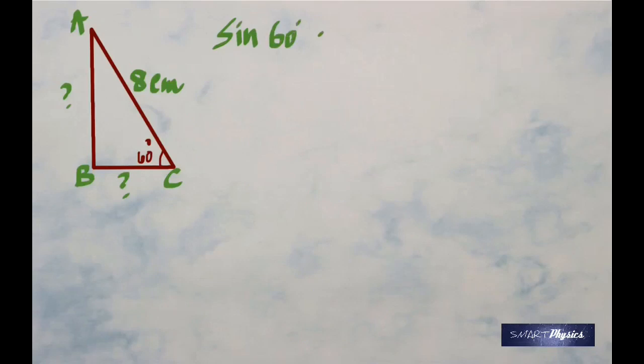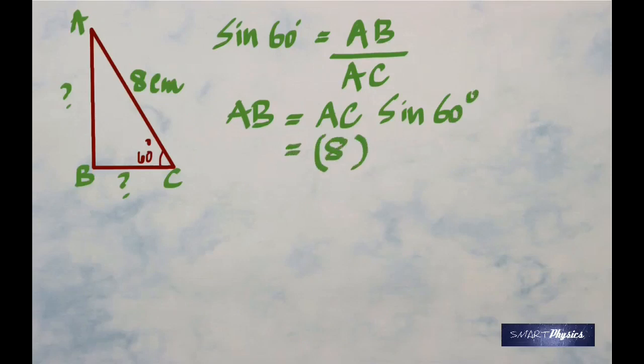Sin 60 is opposite side by hypotenuse, so it's AB by AC. Therefore AB would be AC times sin 60. AC is 8 cm, so sin 60 degrees from your calculator should give 0.8660. Make sure that your calculators are set on degrees and not on radians. When you multiply, we get 6.928 cm.